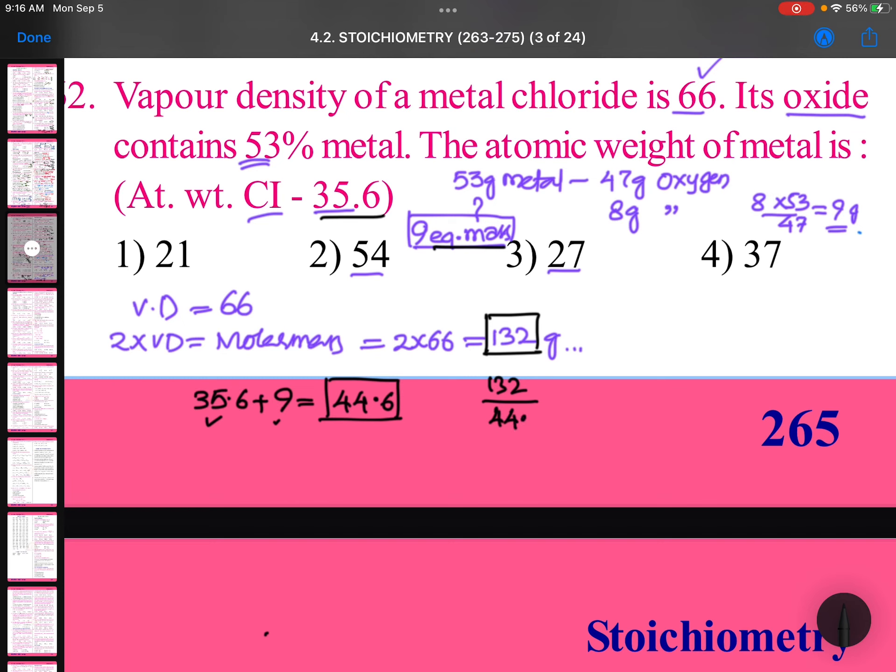3 is the valence factor. Once you find the valence factor, atomic weight equals equivalent weight times valence factor.